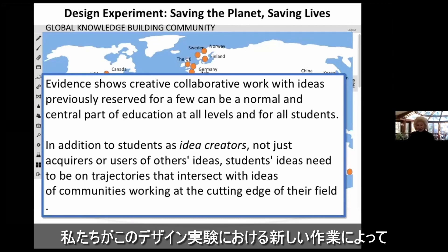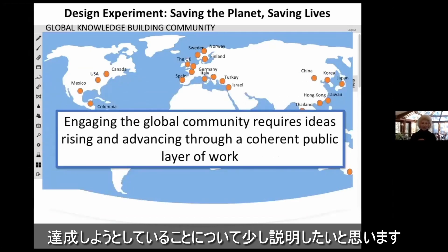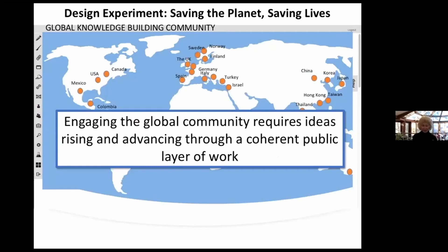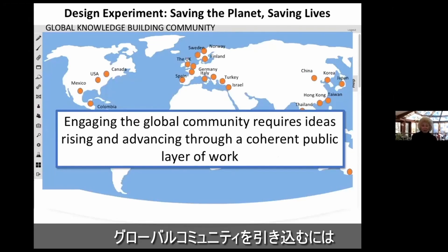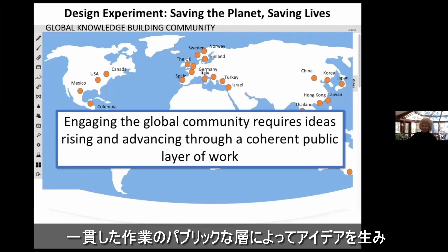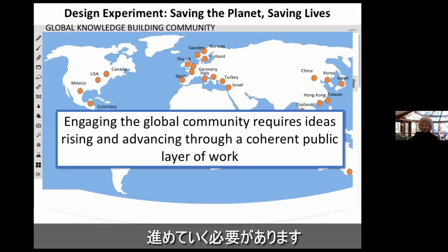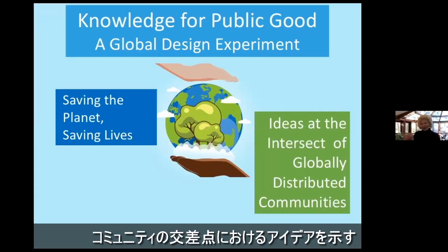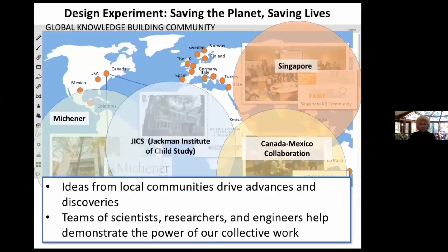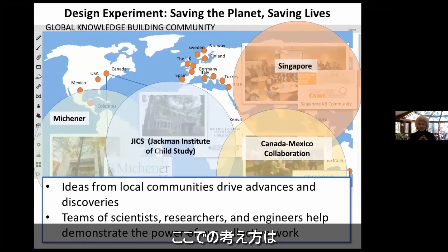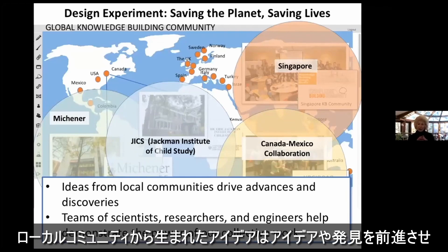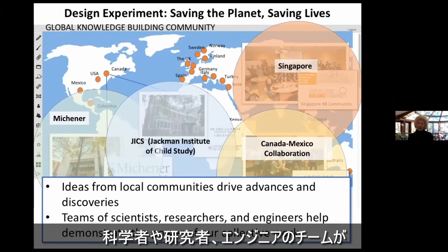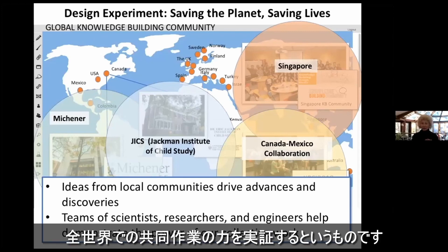That's what I would like to give you some sense of how we are trying to accomplish in this new design experiment. Engaging the global community requires ideas rising and advancing through a coherent public layer of work — ideas at the intersect of global distributed communities. Ideas from local communities will help advance discoveries, and teams of scientists, researchers, and engineers will help demonstrate the power of our collective work.